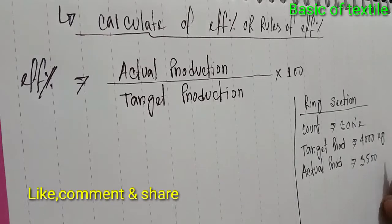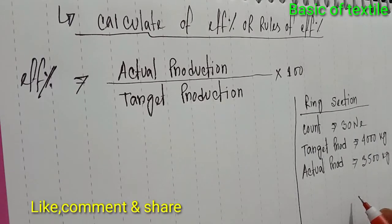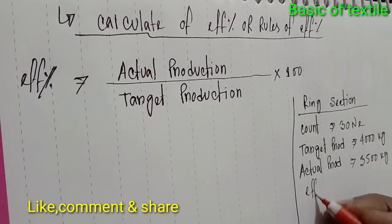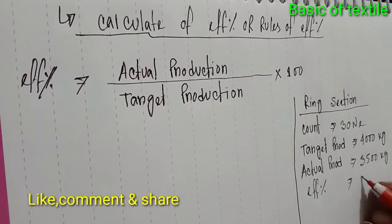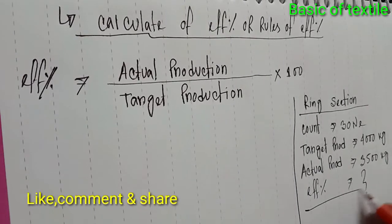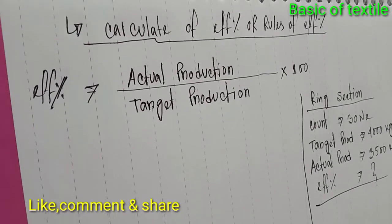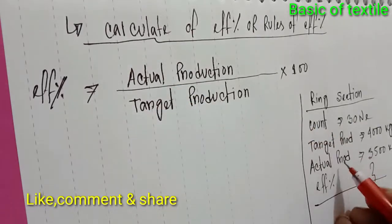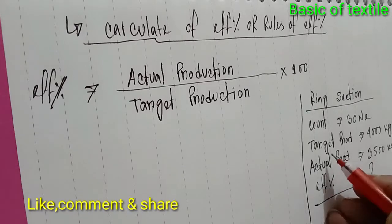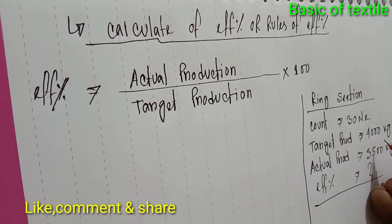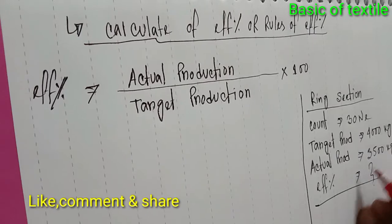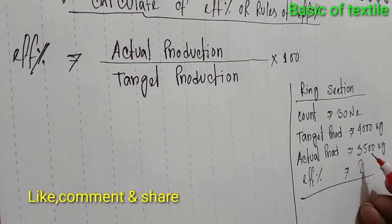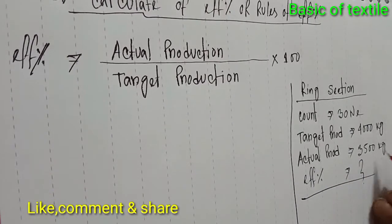The target production was 4,000 kg, and the actual production was 3,500 kg. So efficiency percent equals actual production divided by target production into 100.